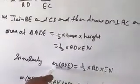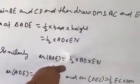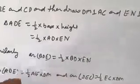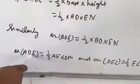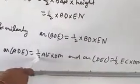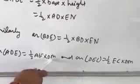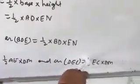Similarly, area of BDE equals 1 upon 2 times BD times EN. Then area of ADE equals 1 upon 2 times AE times DM, and area of DEC equals